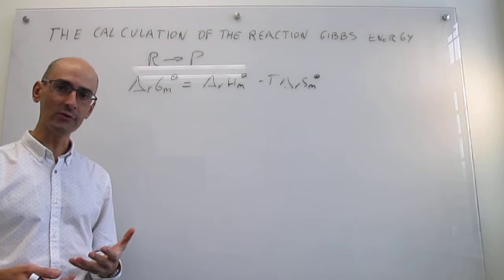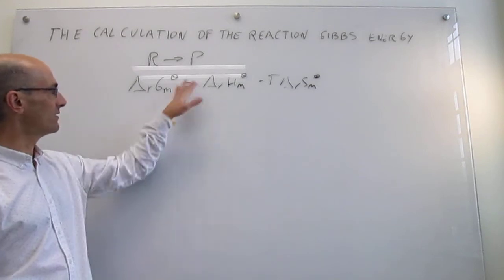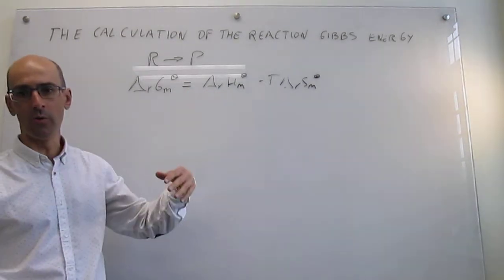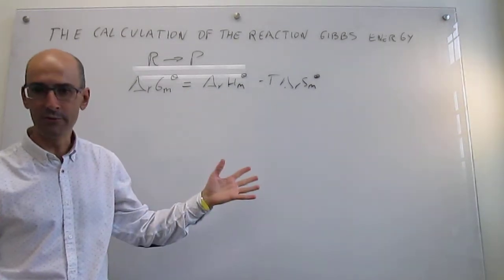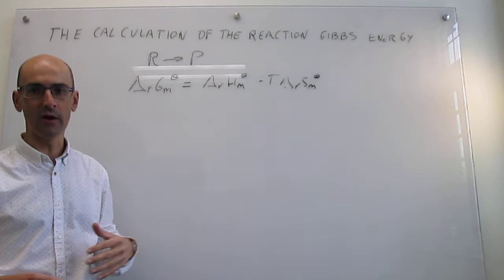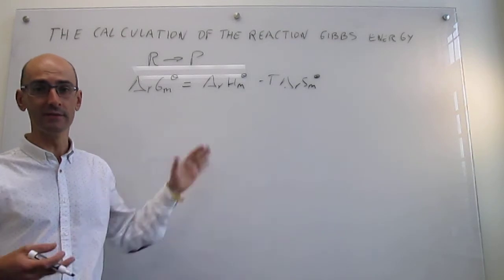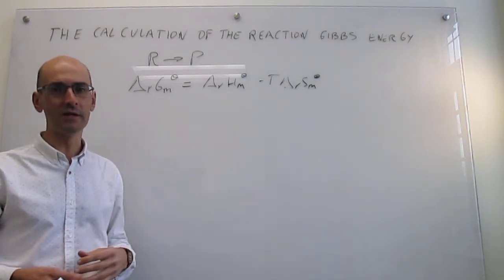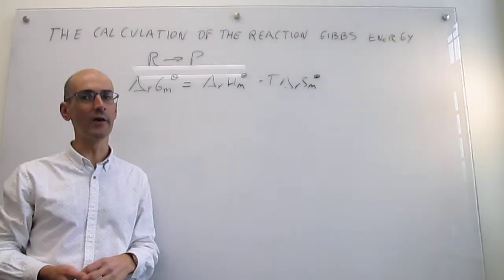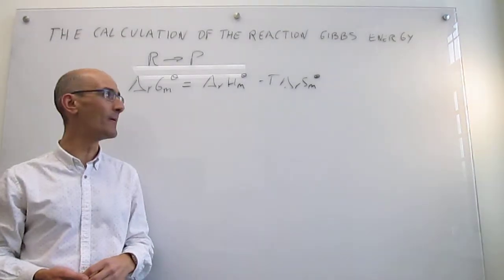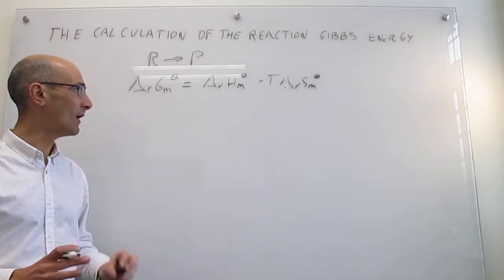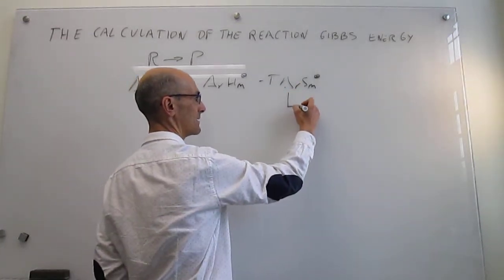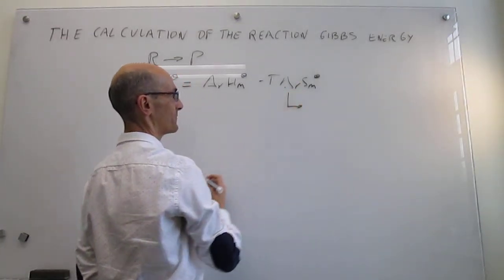If you have data at other conditions — say non-standard or at temperatures different from 298 K — this relationship would still apply, but those data are a little harder to combine. So let's review how we calculate these values.